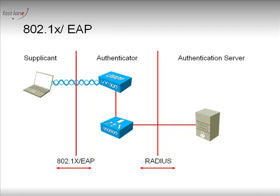802.1x defines some standard messages that are going to be exchanged between the supplicant and the authentication server, such as: authenticate me please, what are your credentials, failure, success — these kinds of messages. So 802.1x is used in combination with EAP to perform this authentication on the wireless network.